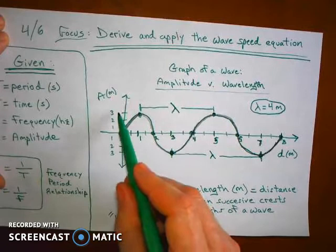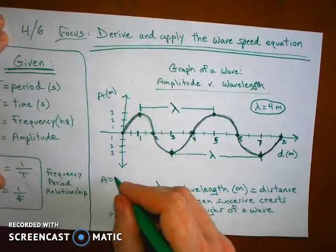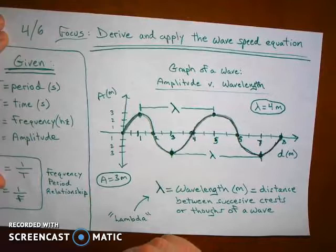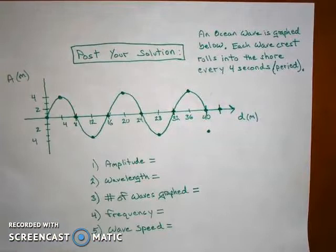Looking at this graph, you could determine the wavelength is 4 meters. You could determine the height of the wave. How much it rises to each crest is 3 meters above or it falls 3 meters below. So the amplitude in this problem is 3 meters. You can see we're measuring the units of meters. But if I were to give you the period of this wave or the frequency of this wave, you could figure out the speed at which it's traveling. And that's what we're going to do for our warm-up problem.